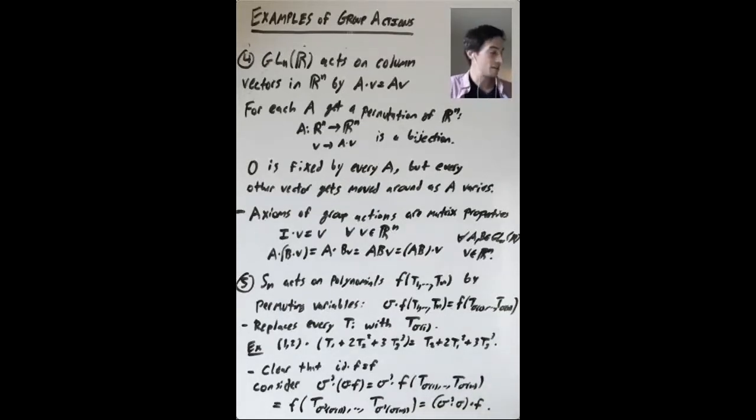So we'll get F of t sigma prime of sigma of 1 all the way to t of sigma prime of sigma of n. And what is that? That's the permutation sigma prime following sigma applied to 1, sigma prime following sigma applied to n. So this is what we get by taking the product in Sn, sigma prime times sigma, and acting on the polynomial F.